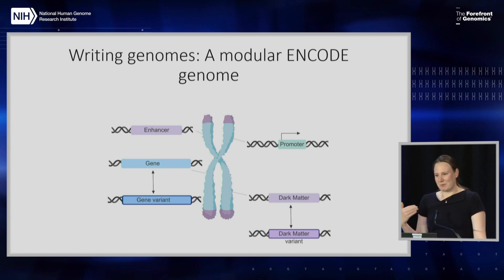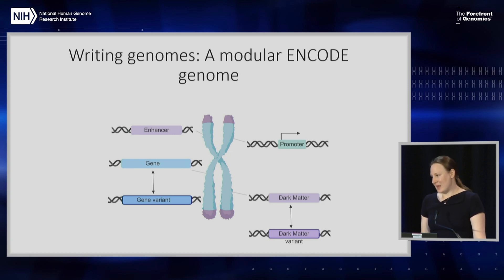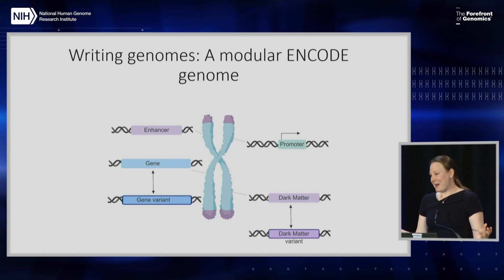Much like when we were trying to sequence genomes, it seemed almost impossible when we started — and now look where we are. Trying to synthesize genomes, and all the technologies that will develop from that, will be really powerful in moving us past this hurdle. There are 3 billion bases and 8 billion people — how do we work out what all of these base pairs are doing, how they encode us, and what mistakes cause disease?